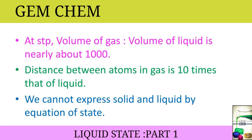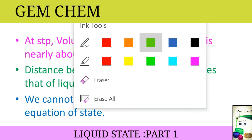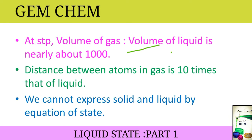This next slide is very important. From experiments, it has been obtained that the volume of gas divided by the volume of liquid is nearly about 1,000 at STP. From this we can infer that the distance between atoms in a gas is 10 times that of a liquid. Since volume is proportional to side cubed, by taking the cube root of 1,000 we obtain that the intermolecular distance in gas is 10 times that in liquid.